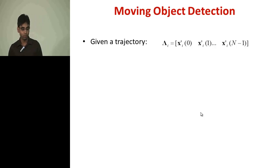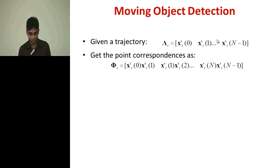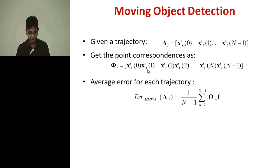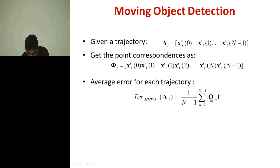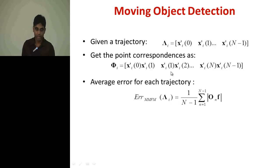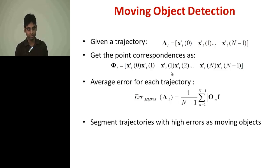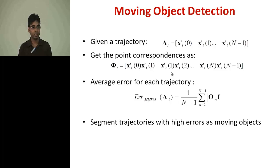To detect a moving object, given a trajectory i, we establish the point correspondences in the trajectories — x_i_0, x_i_1, and so on — and compute the average error for the trajectory. Each point correspondence gives an error when multiplied by the MMFM coefficient, and we average these errors across all correspondences found in the trajectory. The average error for moving points is higher, allowing us to segment out moving trajectories belonging to a moving object.